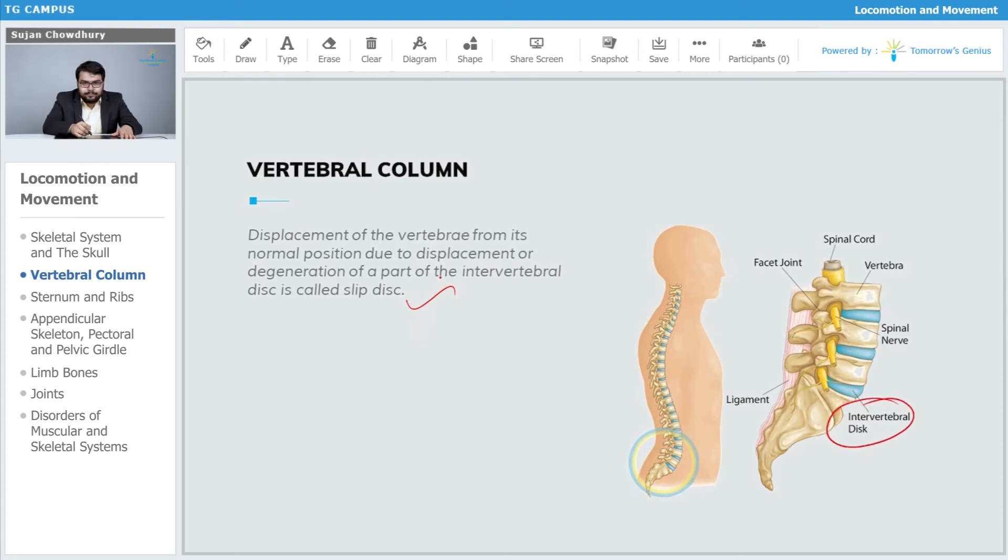We need to maintain correct posture and have a nutrient-rich diet, specifically vitamin D and calcium, because these are important for maintenance of different parts of our skeletal system.